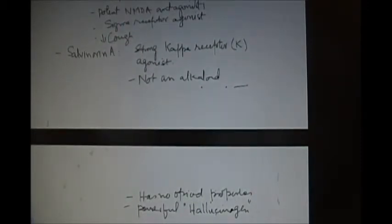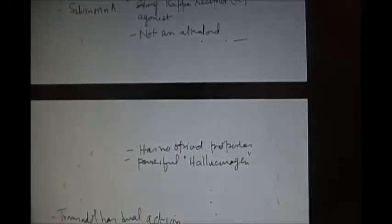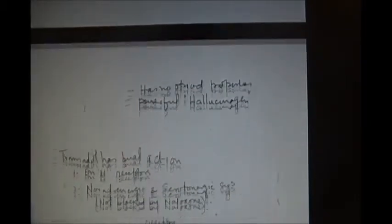The other drug dextromethorphan is an opioid with no analgesic effects. It is a potent NMDA antagonist and a sigma receptor agonist. And it decreases the cough. Salvinorin A is a strong kappa receptor agonist. It is not an alkaloid, has no opioid properties, and is a powerful hallucinogen.